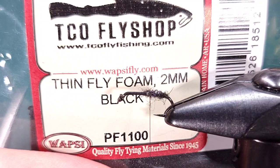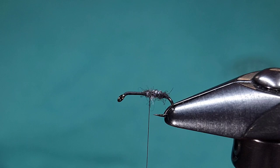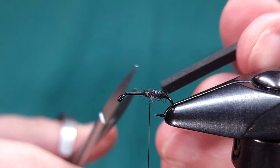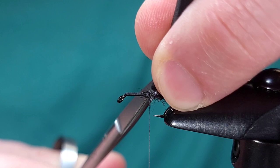For the foam I'm using a strip of two millimeter black thin foam. I've cut this into pre-strips using a nice little tool from On The Dropper over in Europe. You can check him out. I'll drop a link in the bio.